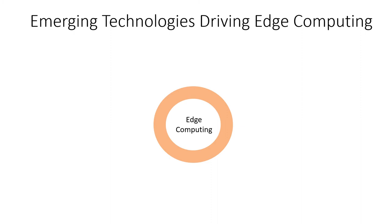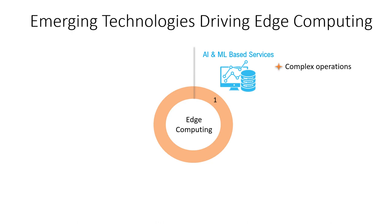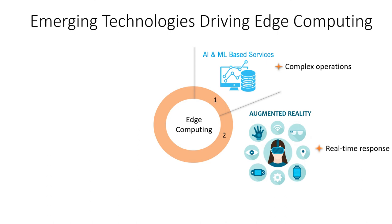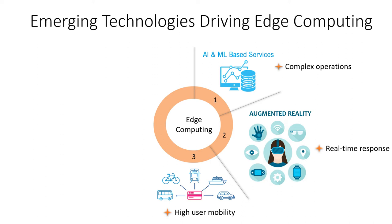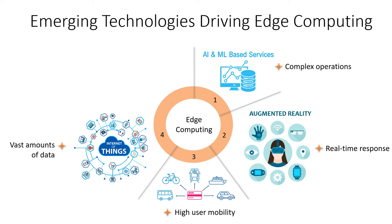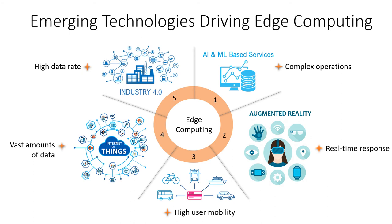There are some emerging technologies that drive edge computing. For example, we have AI and ML-based services with complex operations. There are also augmented reality applications which need real-time response, intelligent transportation system use cases where the clients are highly mobile, Internet of Things applications that stream vast amounts of data, and finally, Industry 4.0 scenarios which need really high data rates.